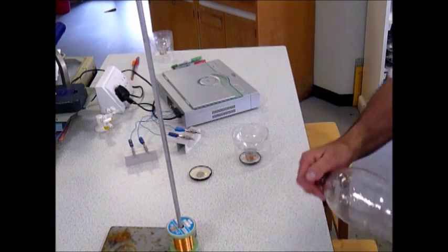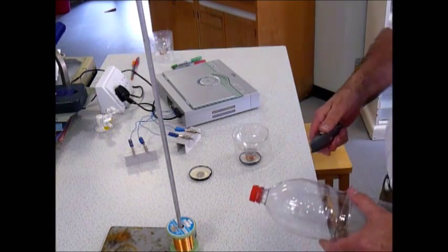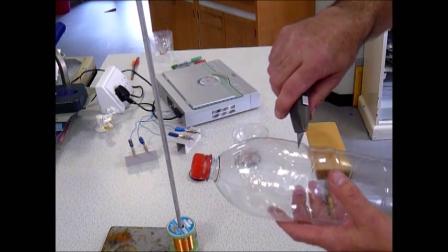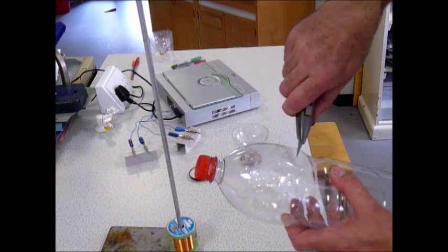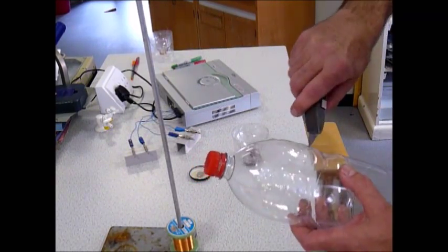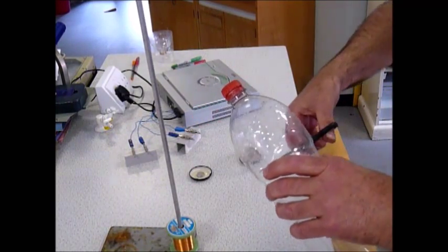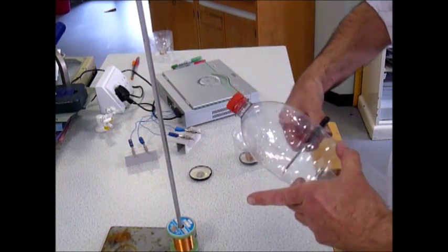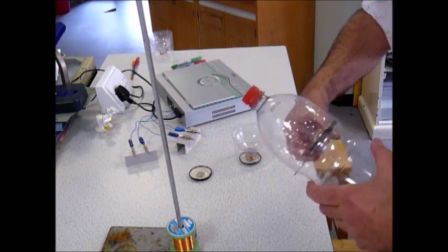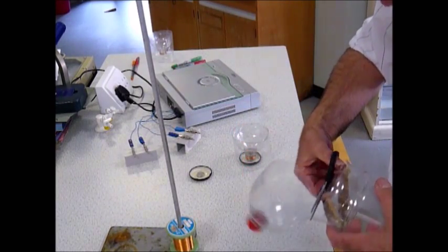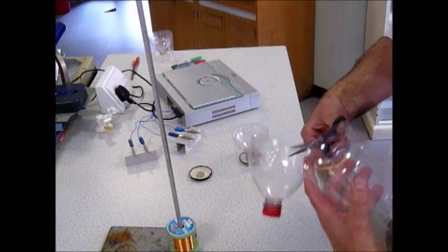Start with the bottle, and make an incision where it just becomes parallel sided. And then cut around the bottle to produce your cone.